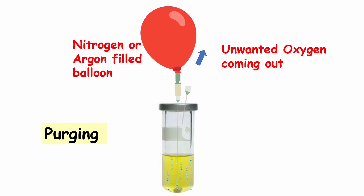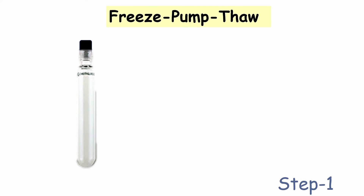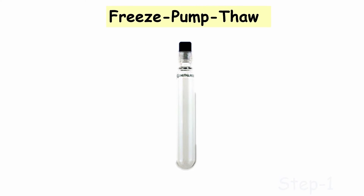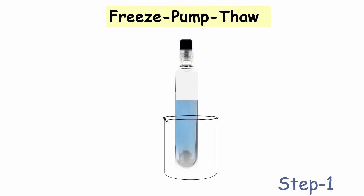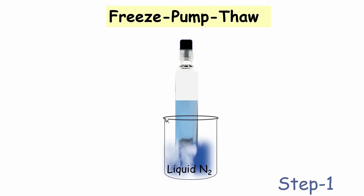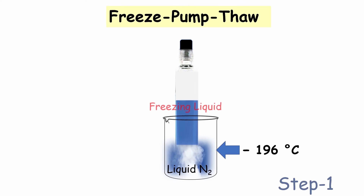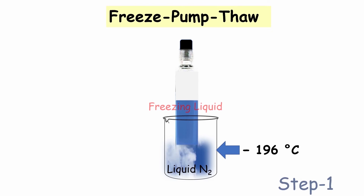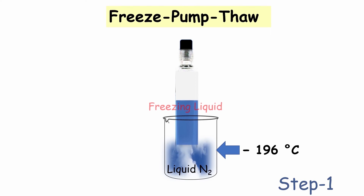So now the most important thing is: how can we do the degassing? Let's discuss the methods for degassing. The first technique is freeze-pump-thaw. As the name suggests — freeze, pump, and thaw — we will do exactly that. Solvent degassing can be accomplished most effectively using this technique.